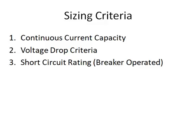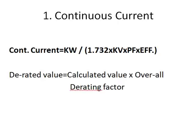There are three criteria for cable sizing calculation. Number one is continuous current capability. Number two is voltage drop criteria. And number three is short circuit current rating. The first two criteria are applicable for small rating motors, that means MCCB operated motor feeders. Number three — short circuit rating — is applicable only for breaker operated feeders. So all three criteria shall be fulfilled for breaker operated feeders.